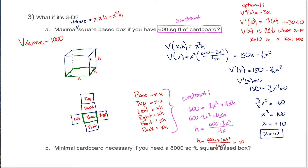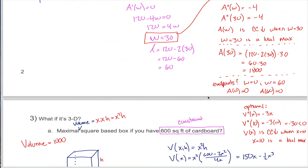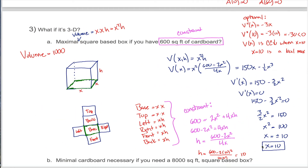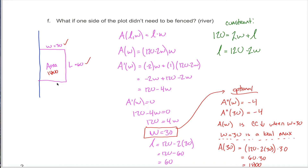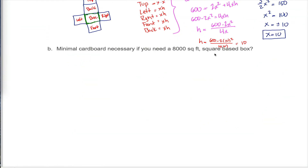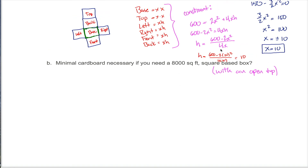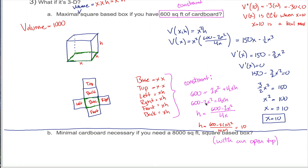You might notice that in the first example from the previous video, both the length and the width ended up being 30. And in this example, the length, width, and height all ended up equal to 10. That happens a lot when you're looking to maximize volume or area. But it's not always the case — if we fence only three sides of a rectangle, we don't end up with a square. And if we make this box with an open top, that'll throw off the symmetry. Let's do one more problem that appears very similar.